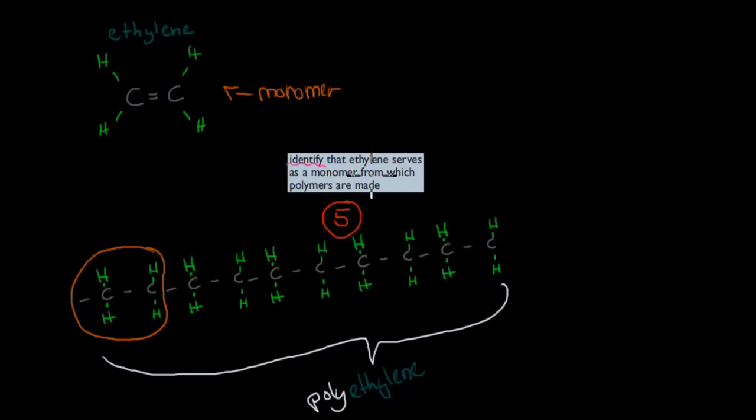Identify ethylene that serves as a monomer from which polymers are made. So this is the ethylene. And when we break this double bond, we can attach it to more ethylenes. So the ethylene is a monomer, but if we have it in one long chain, each of these were a monomer. Then we don't call it ethylene anymore. We call it polyethylene because poly means many. So now we've attached many ethylenes together. That's how ethylene can make a polymer.